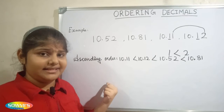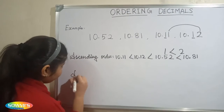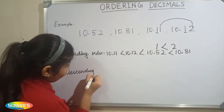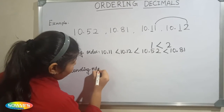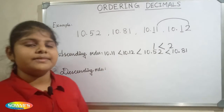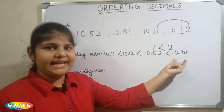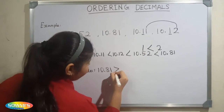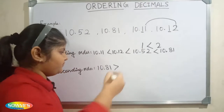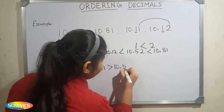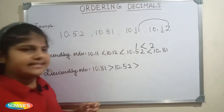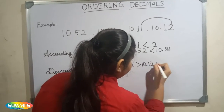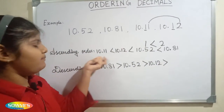Now let us arrange in descending order. The greatest number is 10.81, next 10.52, the next number is 10.12, and the smallest number is 10.11.